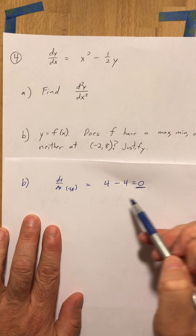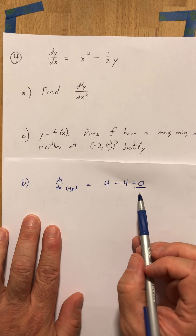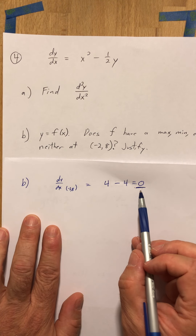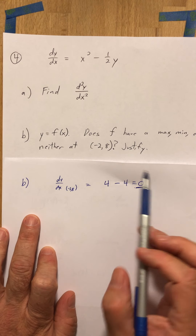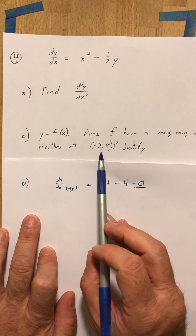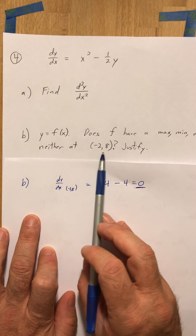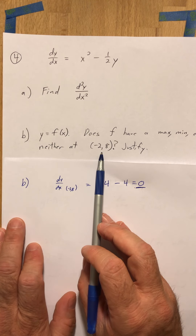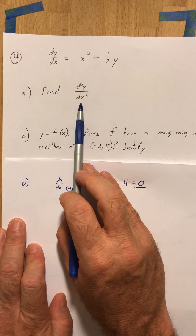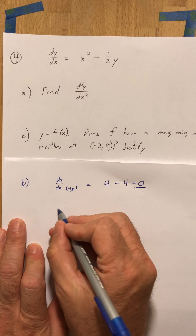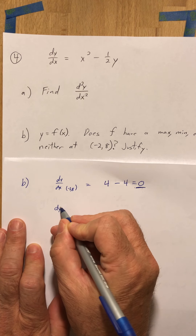The fact that the derivative equals 0 means one of these things is true — max, min, or neither. Usually I would test the derivative before and after, but I have no information in this problem about before and after this point. What I do have is the second derivative that we just found in part a, so we're going to use that.